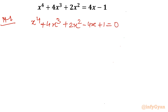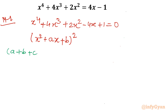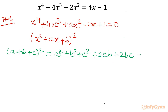Now I am thinking to write this in the form of biquadratic — square of x squared plus ax plus b. I will use the algebraic identity: (a + b + c)² equals a² plus b² plus c² plus 2ab plus 2bc plus 2ca.